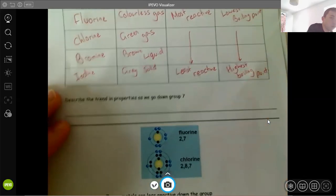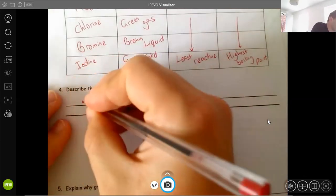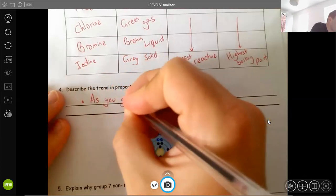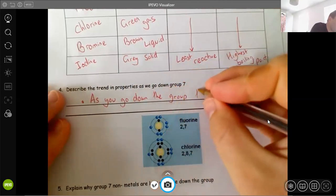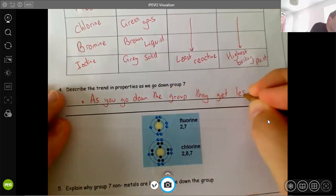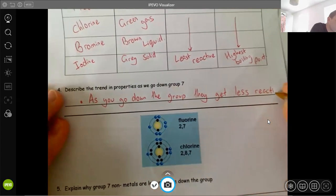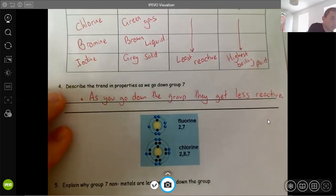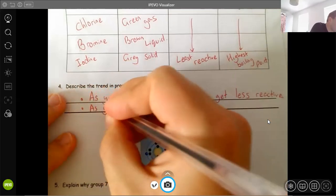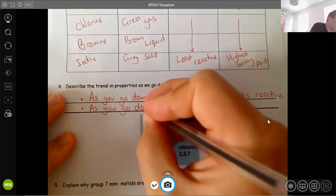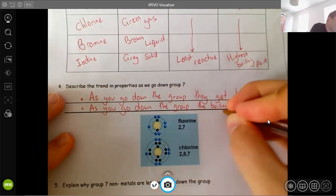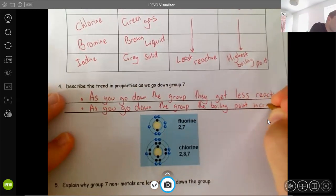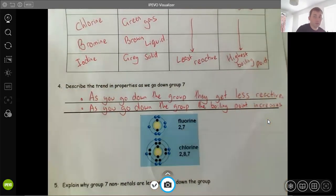So the trends then, what do we need to know about the trends and properties? Two things. As you go down the group, they get less reactive. So it's the opposite to what happened in Group 1. So as you go down the group they get less reactive. We'll explain that in a minute. But also, as you go down the group, the boiling point increases. So those are the two trends you need to know about.